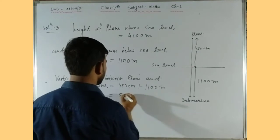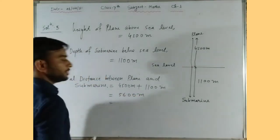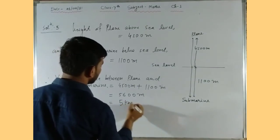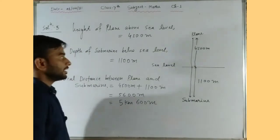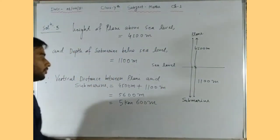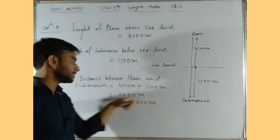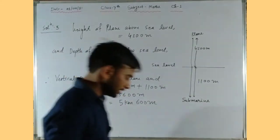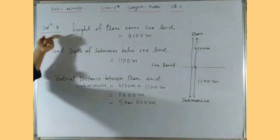Adding 4500 and 1100 gives 5600 meters. Converting to kilometers: 5 kilometers and 600 meters. So the vertical distance between the plane and the submarine is 5600 meters, or 5 kilometers 600 meters.